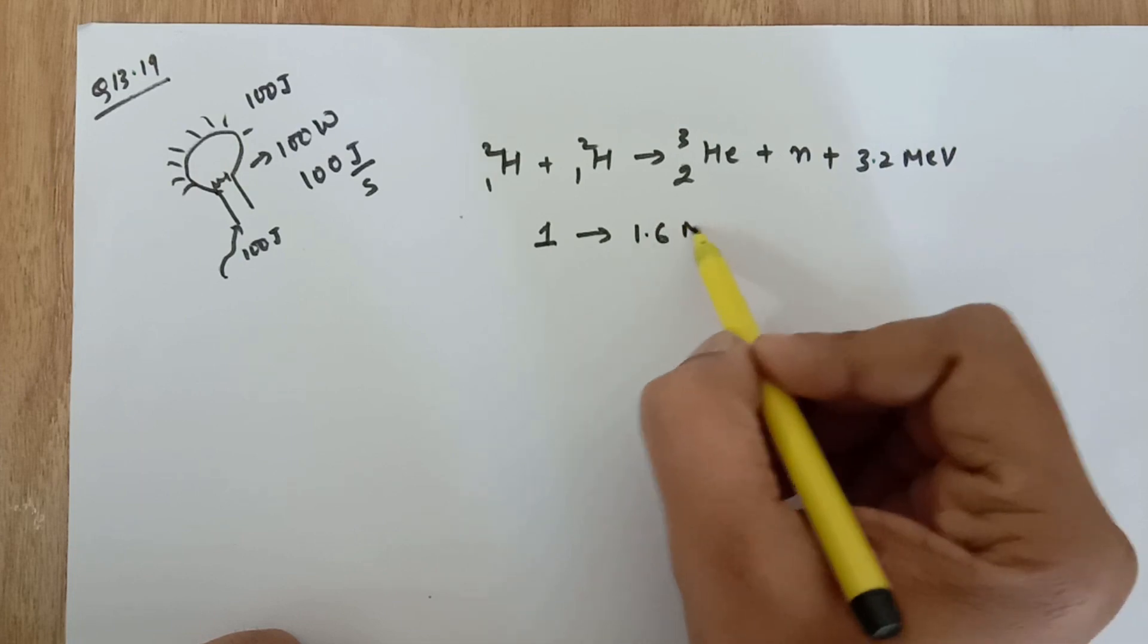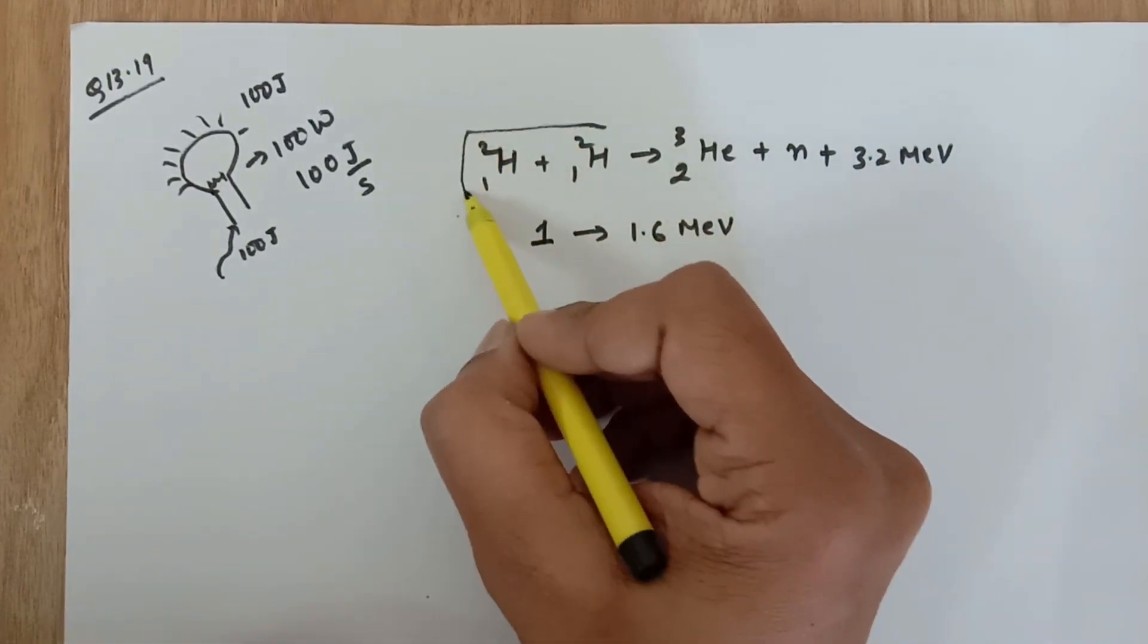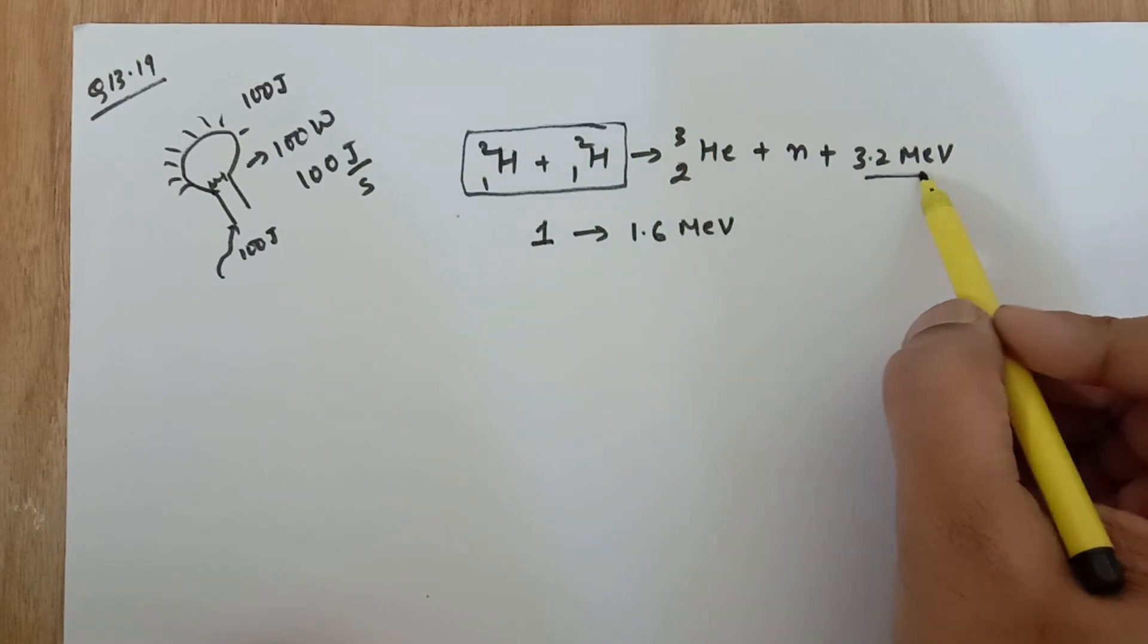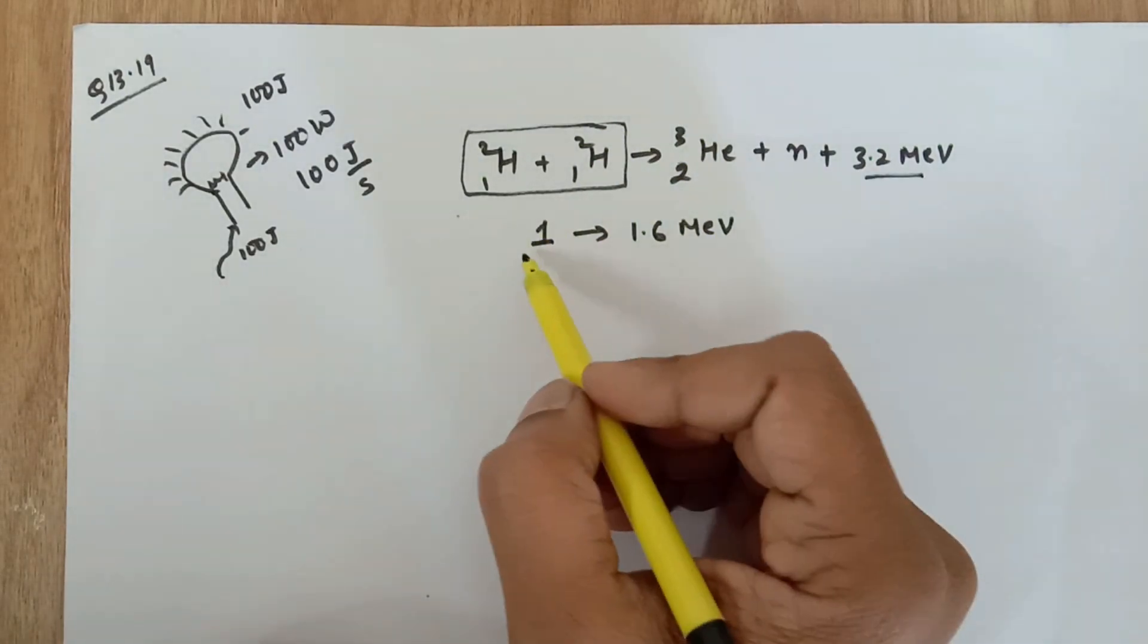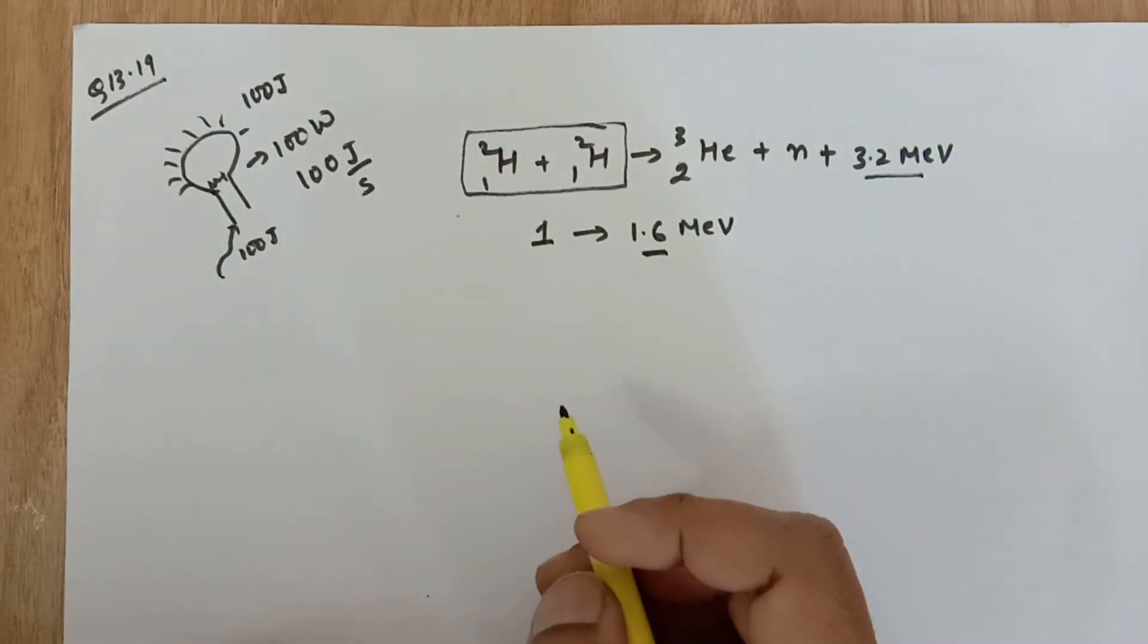So that is 1.6 MeV energy. Two deuterium atoms are getting used up to give this much amount of energy, so one deuterium atom would give this much amount of energy.